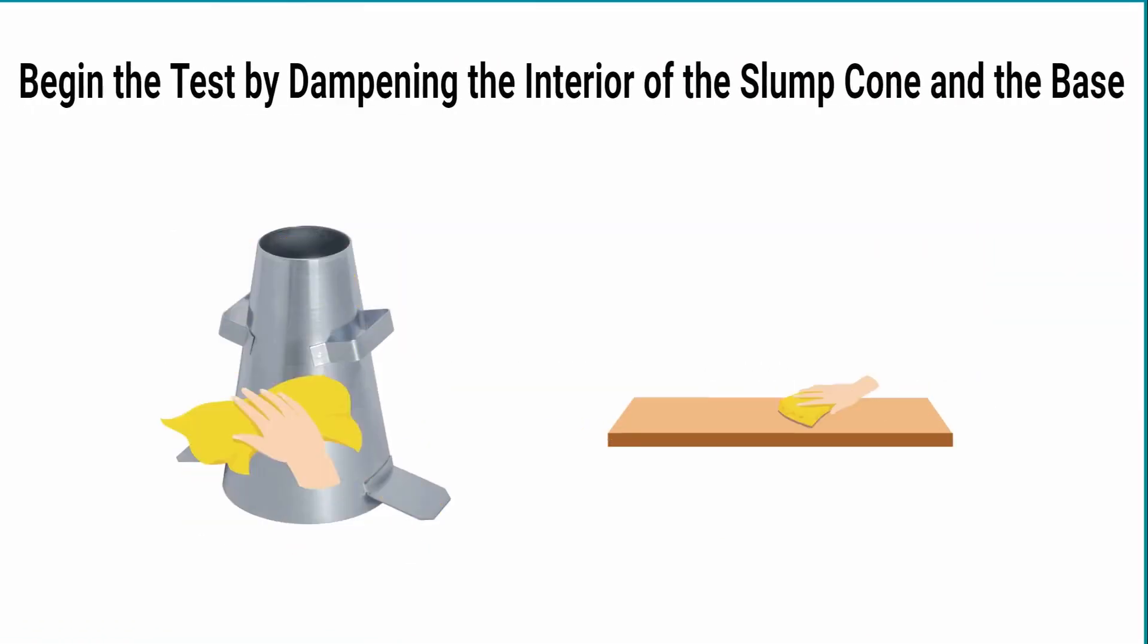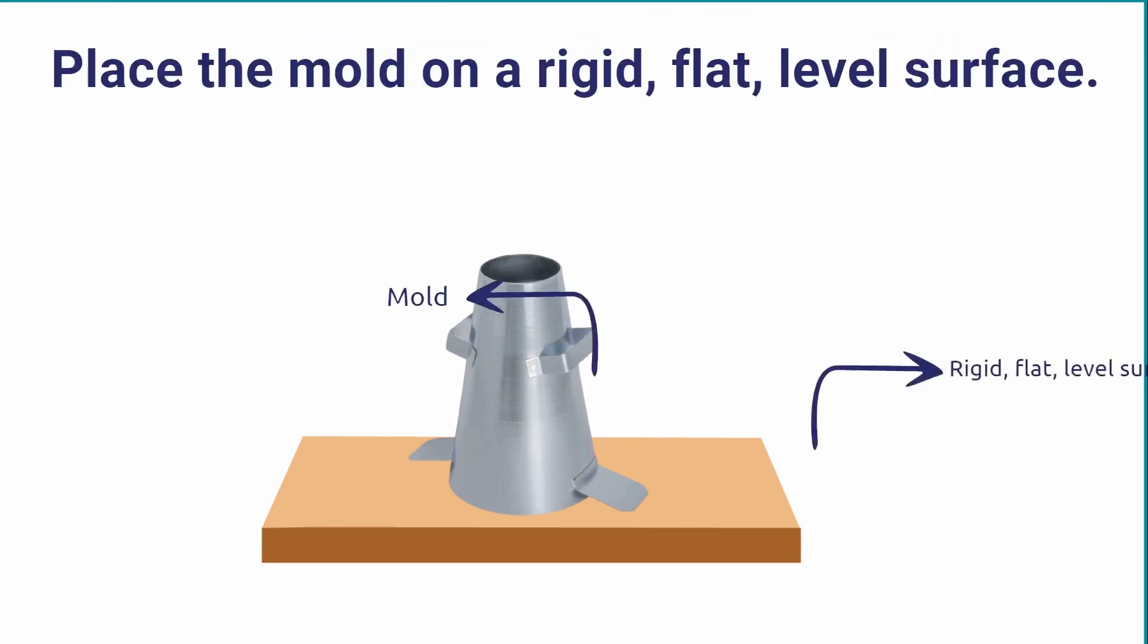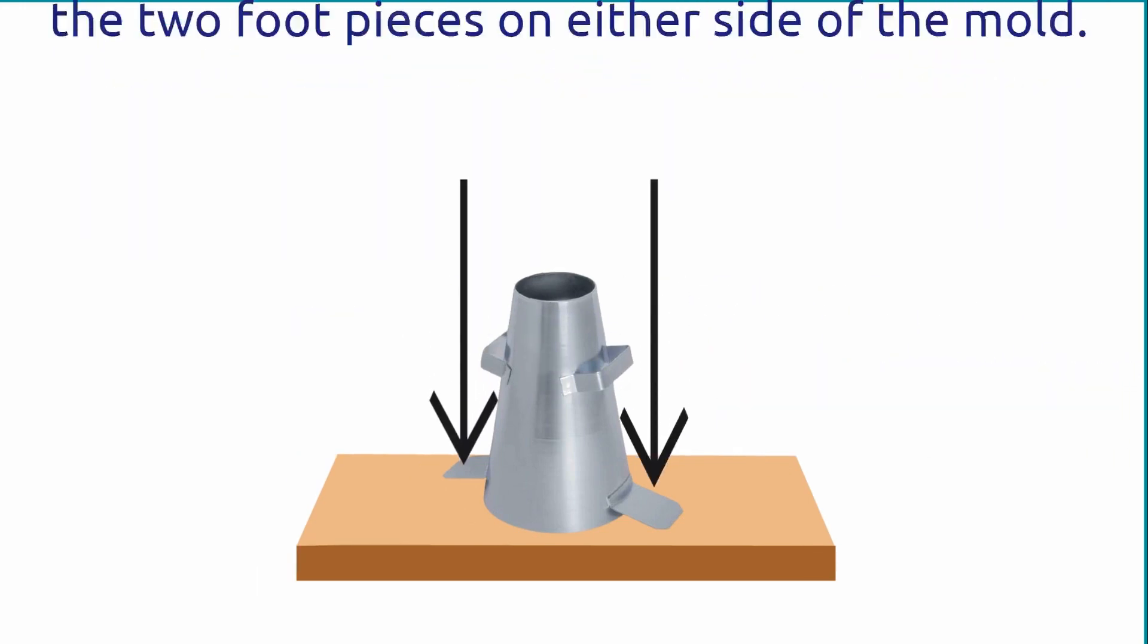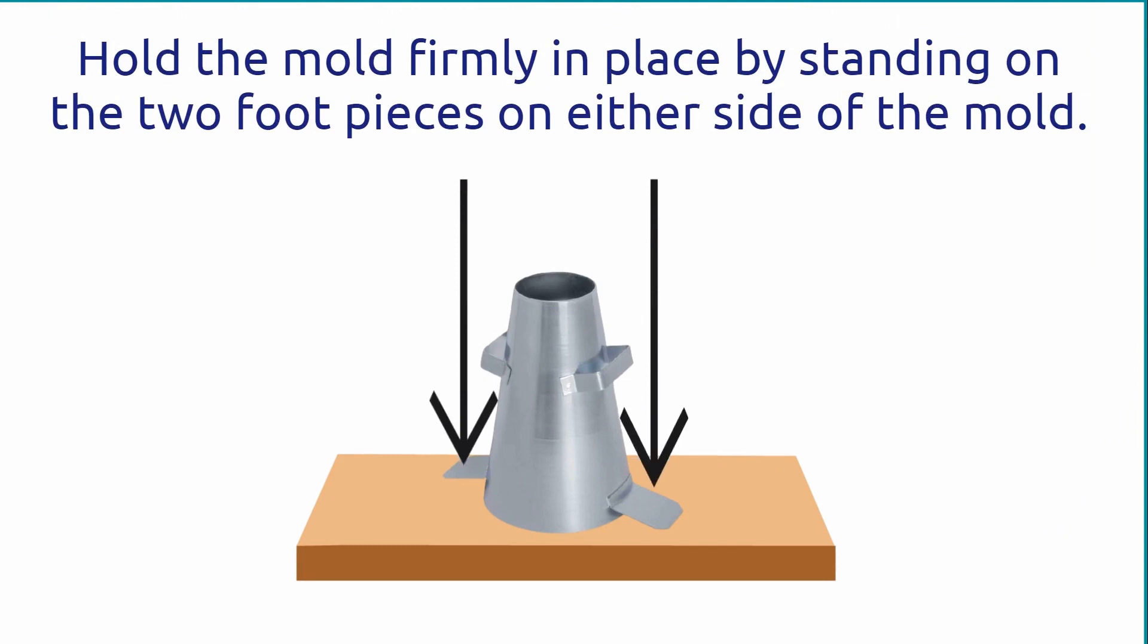We will begin the test by dampening the interior of the slump cone and the base. Place the mold on a rigid, flat, level surface. Hold the mold firmly in place by standing on the two-foot pieces on either side of the mold.